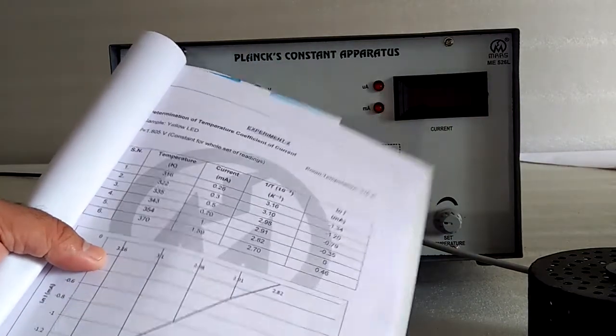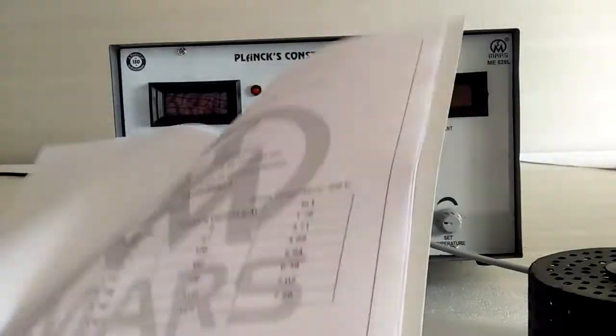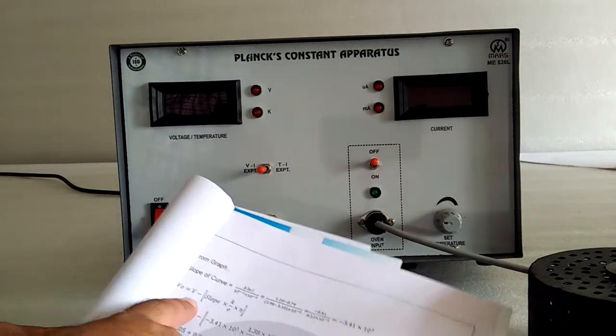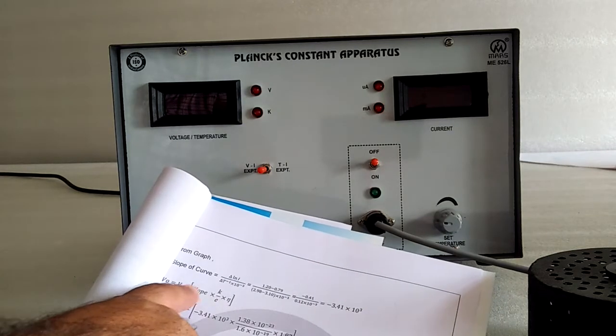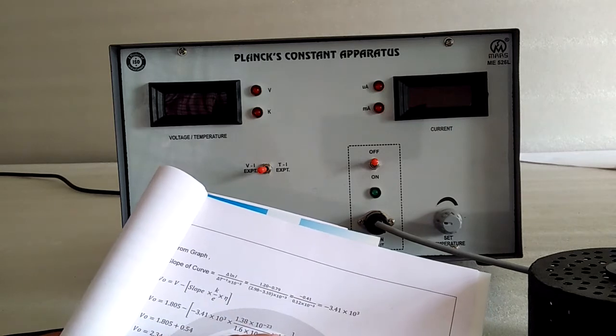Here is the graph. Then, with the slope of curve, here is the formulation. At the constant voltage, put the parameters over here. Here is the constant of the LED.